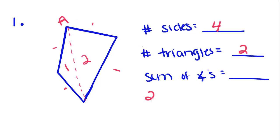2 times 180 equals 360. Each one of these angles added together will give us 360 degrees.